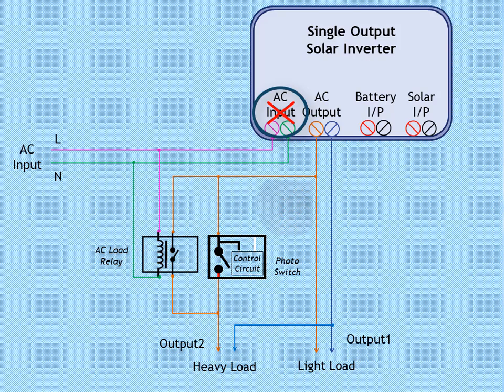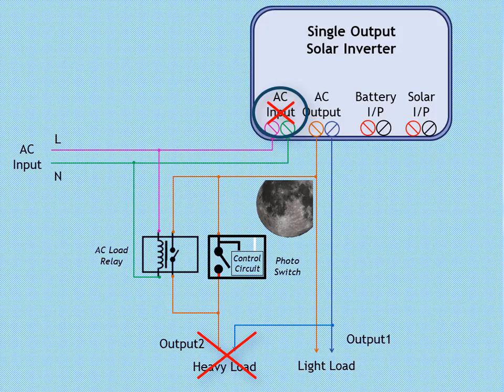During night, whenever AC input of inverter interrupts, the heavy load will always be disconnected by AC load relay as well as photo sensor switch. Only light load will be active until AC input is absent in order to save battery life.